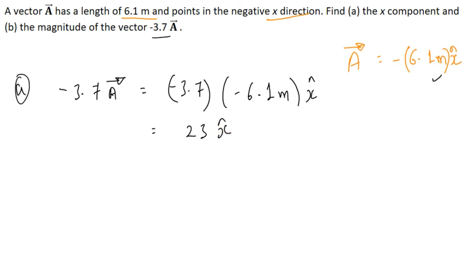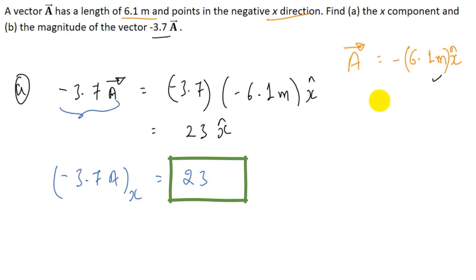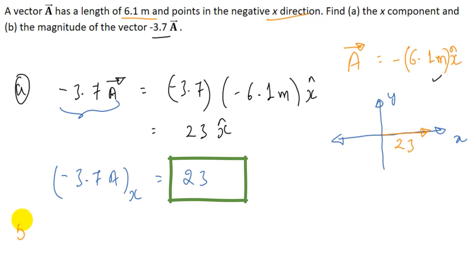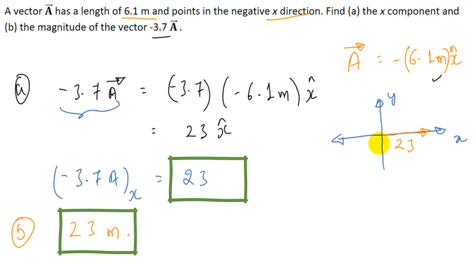We can solve part A easily. The x-component of −3.7A is 23, since this vector points along the positive x-direction, giving us 23 x-cap. Graphically, this vector lies along the positive x-axis with magnitude 23. For part B, the magnitude is also 23 meters, because the vector has no component along y — it lies entirely in the x-direction, so this itself is its magnitude.